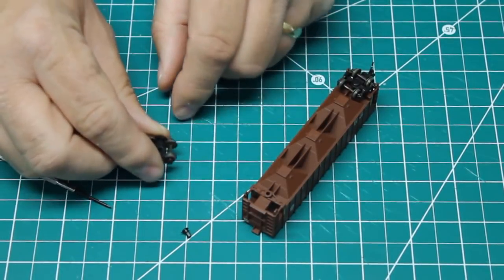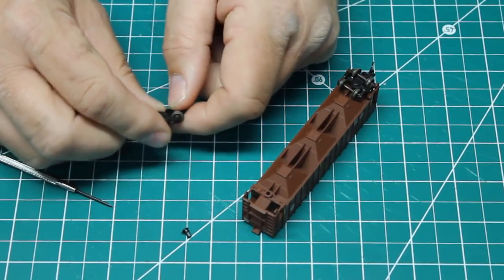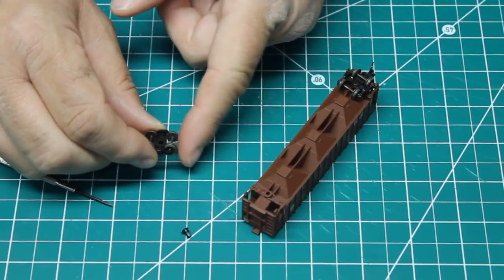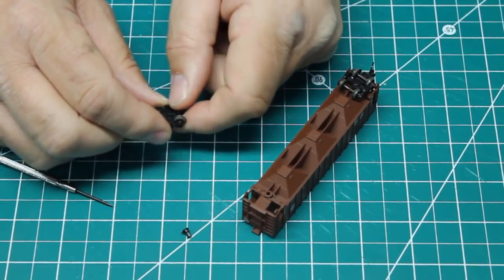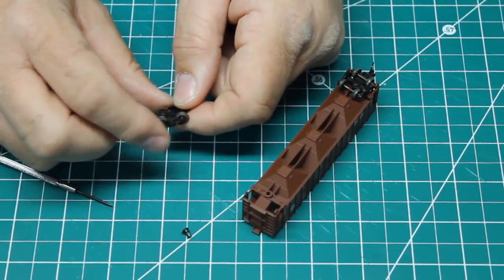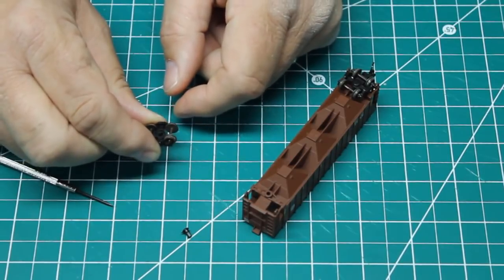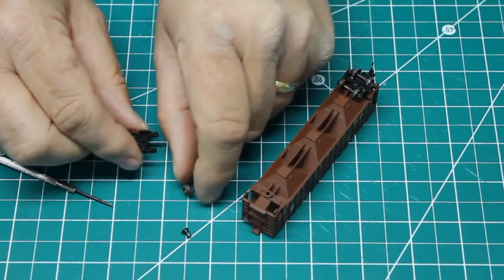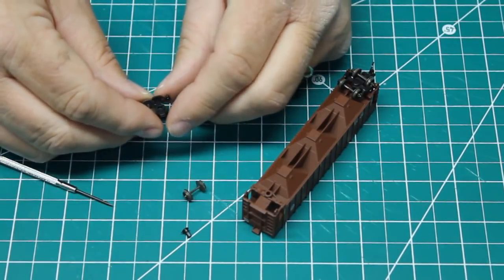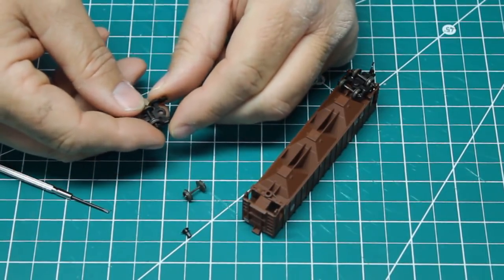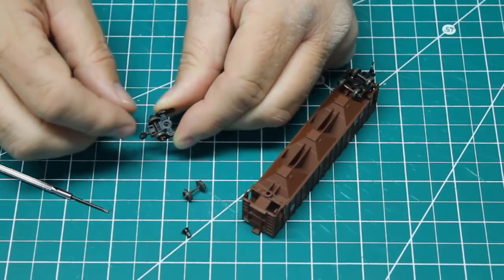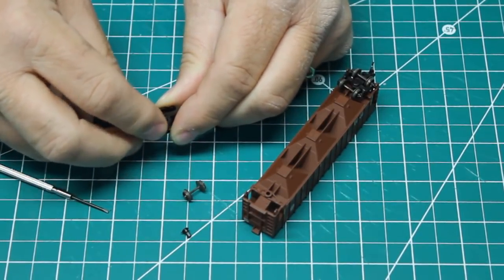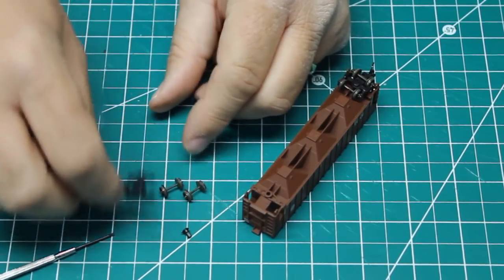Now I can remove the wheel sets from these trucks most easily by removing the rear wheel set first, the one farthest away from the coupler. And I'm just going to hold the truck up here by the front wheel set and I can just pull and kind of twist and pry that wheel set right out. And once I've got that one out, I can kind of squeeze on the truck on this back side and that front wheel set will pop out as well.